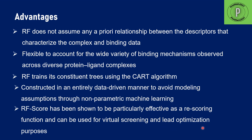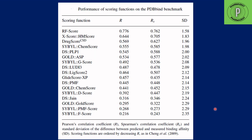RF score has been shown to be particularly effective as a rescoring function for virtual screening and lead optimization. After performing docking, when you again predict the ligand binding affinity, it is known as a rescoring function. When compared with all other highly popular scoring functions currently in use across different docking programs, evaluating the R value and standard deviation, RF score has been concluded to be the best performer among all current scoring functions.